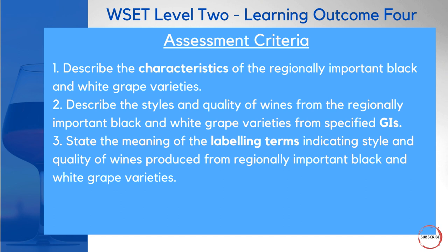As with previous videos, I'm going to go through the assessment criteria, and then once we dig into each criterion individually, we'll create some questions based upon it. The assessment criteria for outcome 4 covers: describing the characteristics of regionally important black and white grape varieties; describing the styles and quality of wines from specific GIs (geographical indicators); and stating the meaning of labelling terms that indicate style and quality of wines produced from these regionally important grapes.